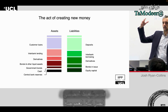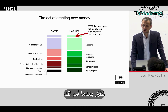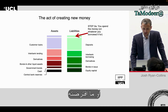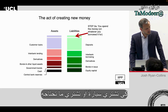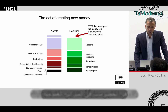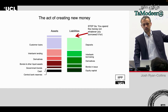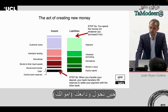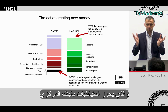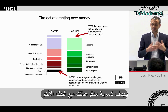Both sides of the balance sheet have expanded, so they remain even. When you then spend what you borrowed — say, buying a car — that reduces the liabilities in your bank's balance sheet because the money goes to another bank. When you transfer your deposit, your bank transfers central bank reserves to settle the payment with that other bank.